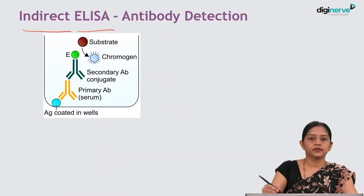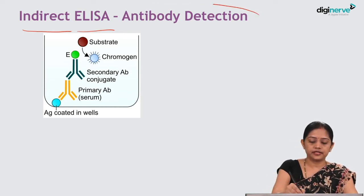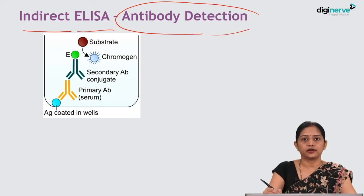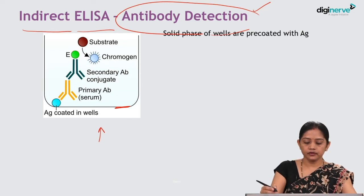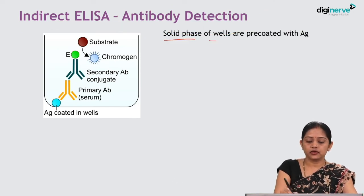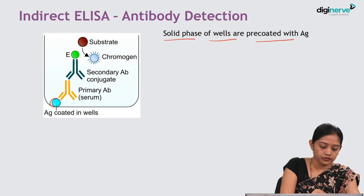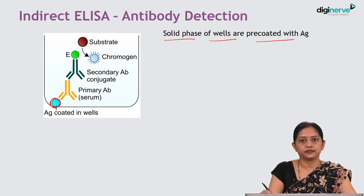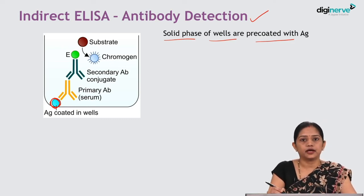The next type is indirect ELISA. Indirect ELISA can be used for antigen detection as well as for antibody detection. Here we will see how indirect ELISA is used for antibody detection. In indirect ELISA, the solid phase of the microtiter well is pre-coated with antigen, because we are performing antibody detection.